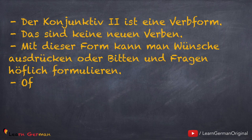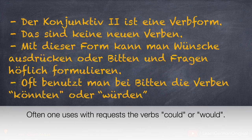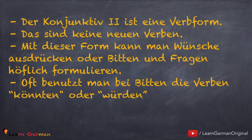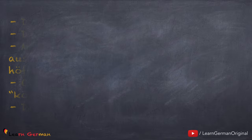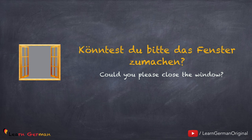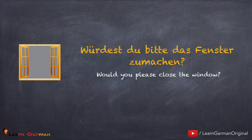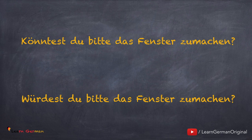Wünsche formulieren lernen wir später in B1. Oft benutzt man bei Bitten die Verben Könnten oder Würden. Diese Bitten sind meistens Fragesätze. Wir schauen uns jetzt zwei Fragen an: Könntest du bitte das Fenster zumachen? Diese gleiche Frage kann man auch so formulieren: Würdest du bitte das Fenster zumachen? Also man kann entweder Könnten benutzen oder Würden. Hier noch einmal die beiden Sätze: Könntest du bitte das Fenster zumachen?